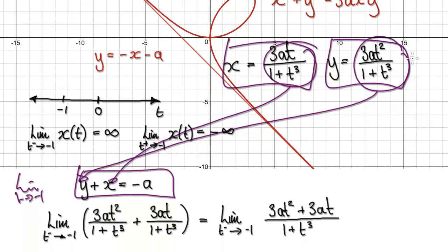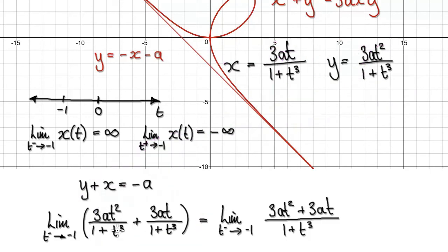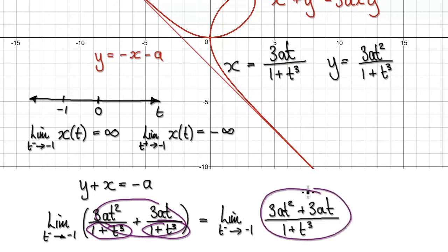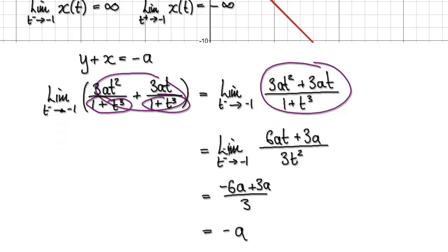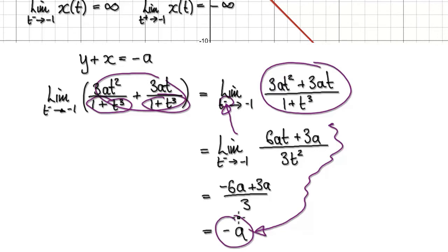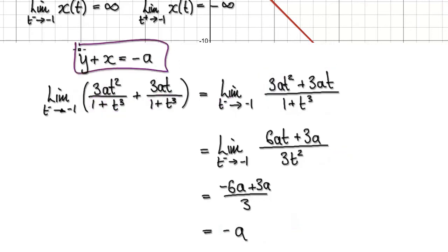Putting x and y into the expression, using the same denominator and merging them together, gives us this. Now take the limit as t tends to -1 from the left-hand side. That gives us -A. So when you take the limit as t heads towards -1 from the left-hand side, this expression indeed heads towards -A, meaning it satisfies the condition.